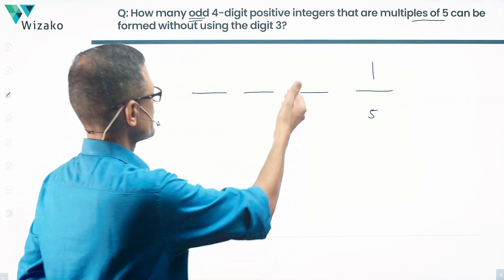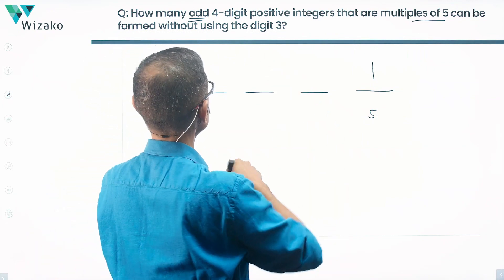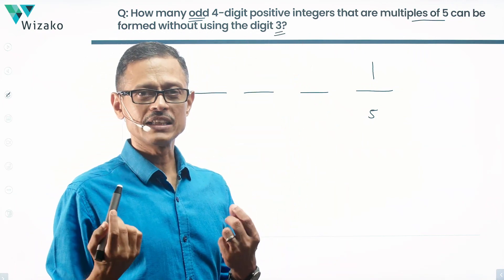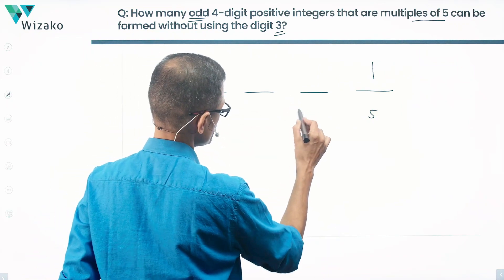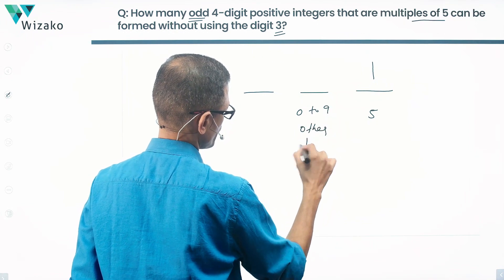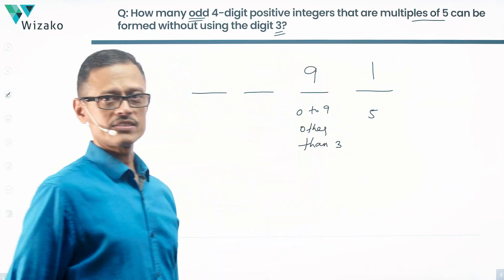How many possibilities does the 10th place have? No constraints, except that it should not contain the digit 3. So 0 to 9, 10 possibilities would have been there. If we remove the possibility of 3 being one of the digits, we've got numbers from 0 to 9 other than 3. That leaves us with 9 options for this place.